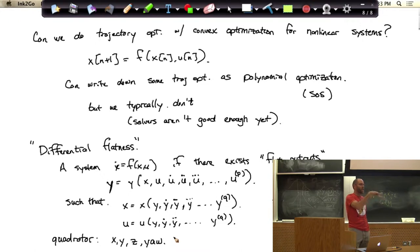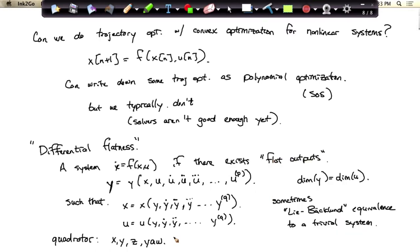I could tell you exactly what the state must have been to achieve that. And similarly, I could tell you exactly what the actions, there's four inputs on a quadrotor, four thrusters. I could tell you exactly what those thrusters must have been if the system went through this one particular trajectory in x, y, z and yaw. Just because it's limited in what it can do.